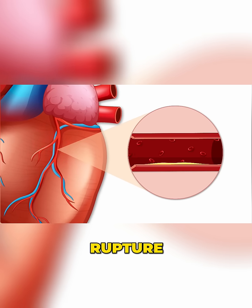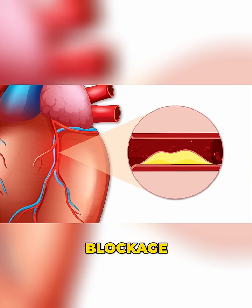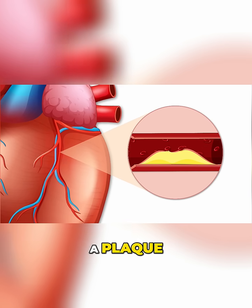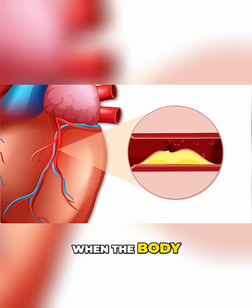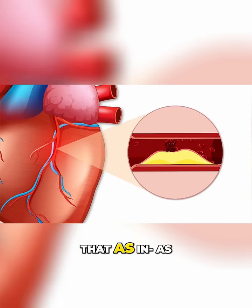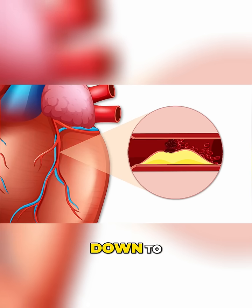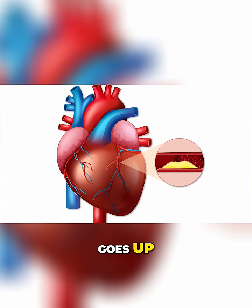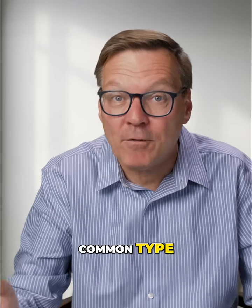In a plaque rupture, we have a partial blockage — fat, cholesterol — an unstable plaque that becomes unstable. It breaks open, and when the body sees that as injury, it clots it off, and then no blood flow goes down to the muscle. The muscle starts to malfunction, the troponin goes up. That's probably the most common type of heart attack.